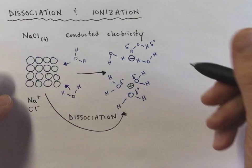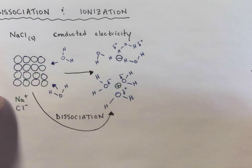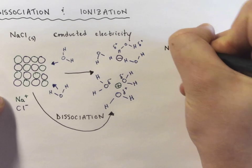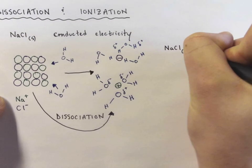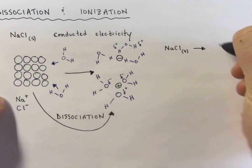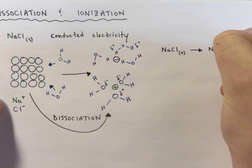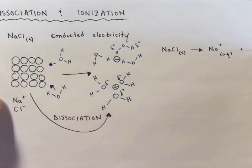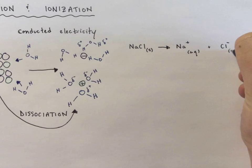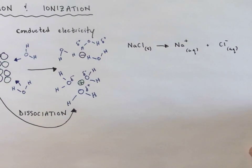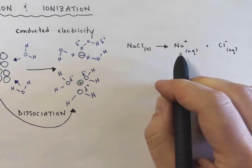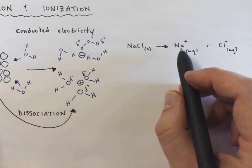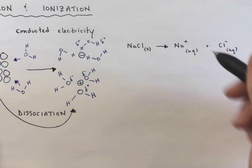So if I were to write a chemical equation of this, it would look like sodium chloride in the solid state turns into sodium ions and chloride ions. So once we get the separation of charges and we have ions in solution, this is the material that actually conducts electricity.